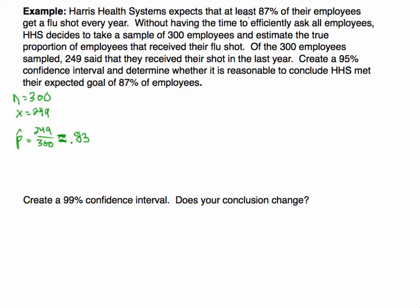It's a little bit less than 87, but we know that there could be sampling error. This could just be one sample of the 300. Perhaps another sample would be 0.89 and give us 89%. So let's use this point estimate to create a confidence interval.